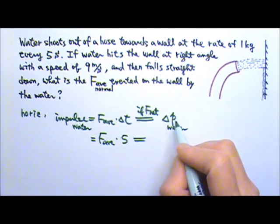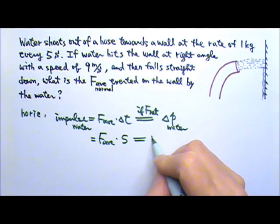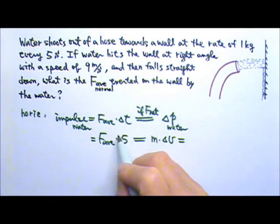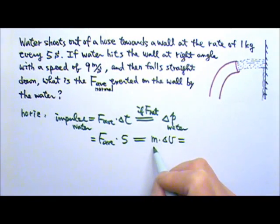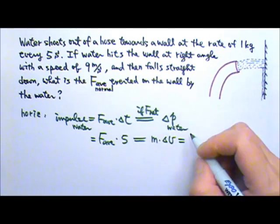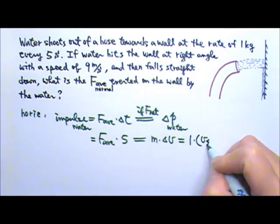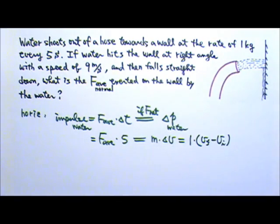And that equals to the delta P, which is M times delta V. If I'm looking at 5 seconds, how much mass am I looking at? That will be 1 kg.